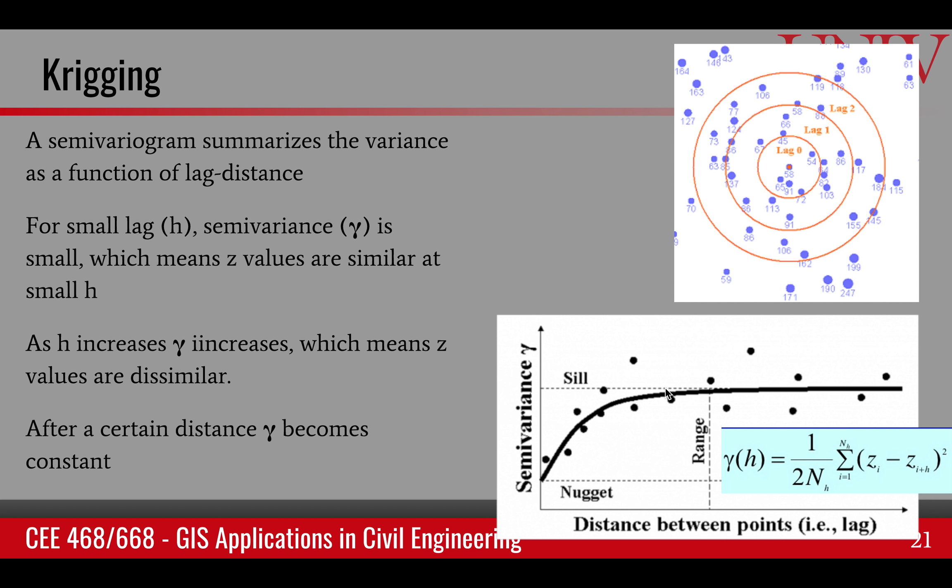A little bit more about semi-variogram. It summarizes the variance as a function of lag distance. Here are some measurements. These could be temperature or rainfall measurements. Because they are related to space, they must have some spatial autocorrelation between them. Things that are here must be related to things that are going on here. But at the same time, we can assume that the points that are closer to this are more correlated than the points that are farther away. This distance is called the lag distance.